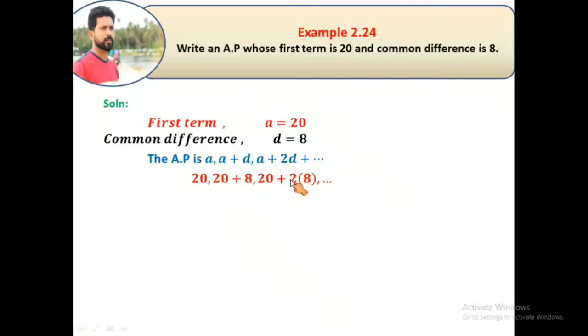So the final answer, the required sequence, is 20, 28, 36, etc. This is the required AP. Thank you students.